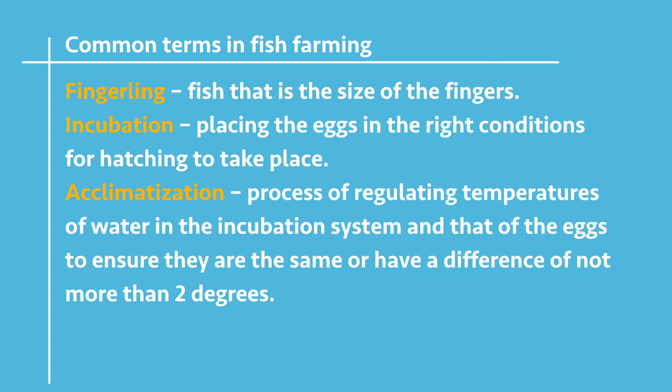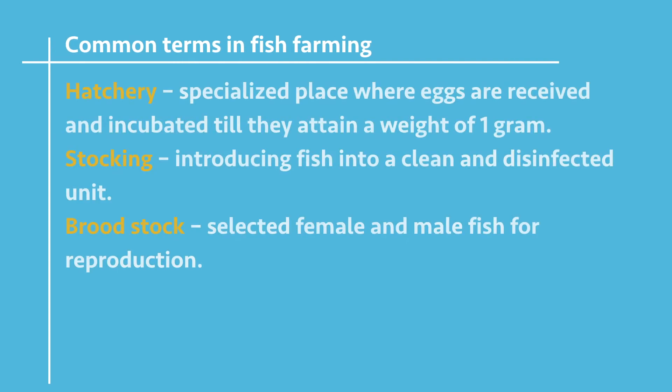Acclimatization is the process of equalizing the water temperature and the incubator temperature, ensuring they are the same or differ by at most 2 degrees. A hatchery is where we receive the eggs, incubate them, and rear them until the fish reaches 1 gram. Stocking is the process of introducing fish into a clean, disinfected unit.